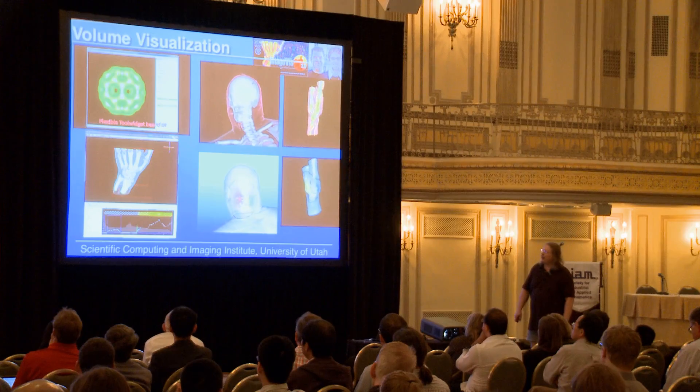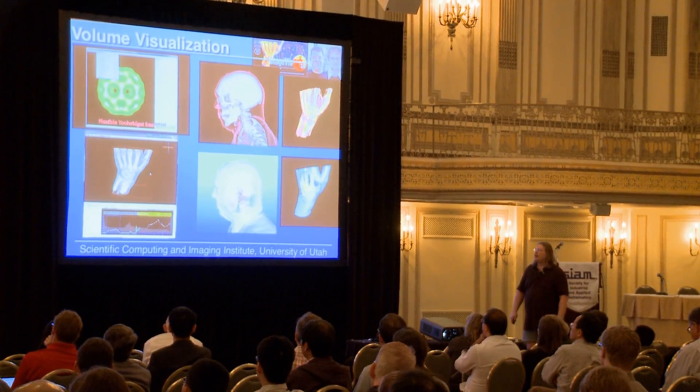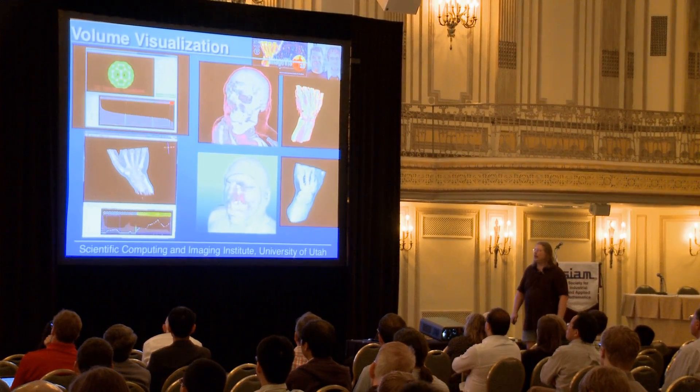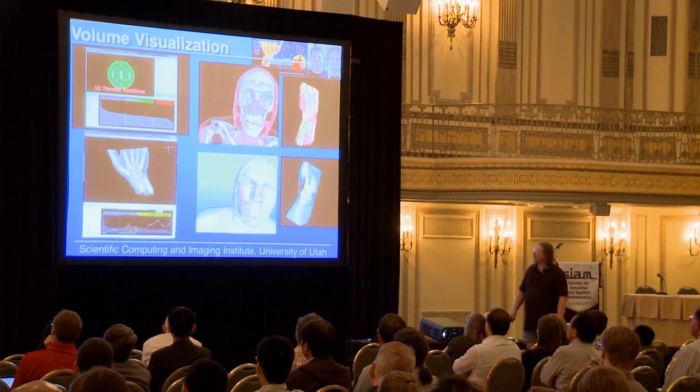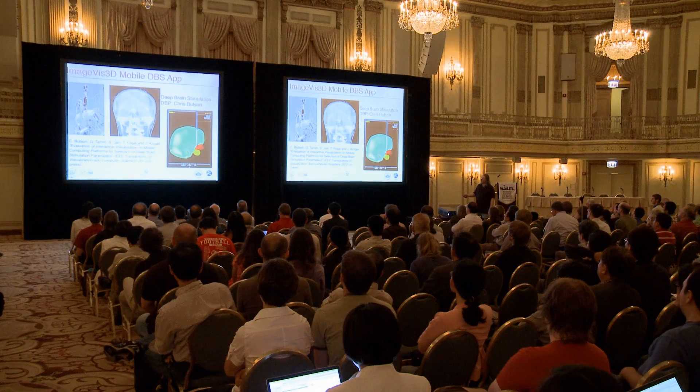About half of our brains are used for image processing and visualizing, so if we can find the right abstractions and the right mappings of data to something that our visual senses will understand, we think that's a good way to try and make use of and understand this data.